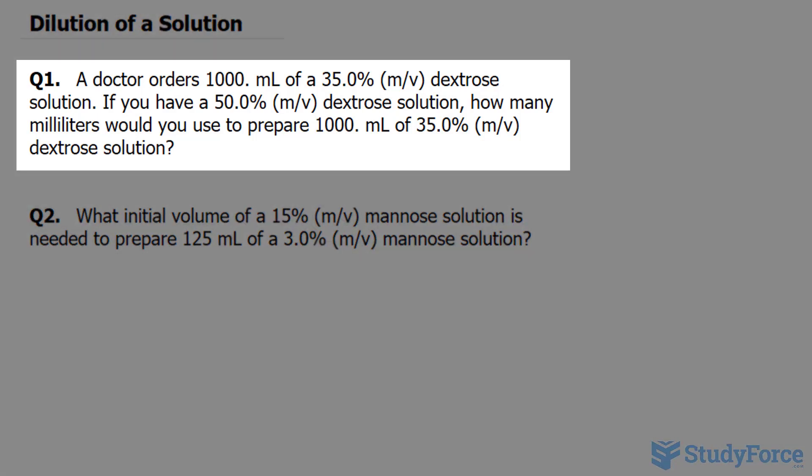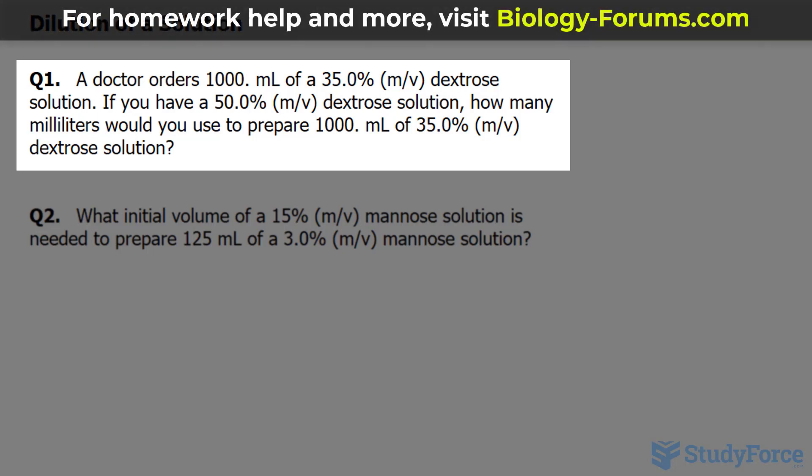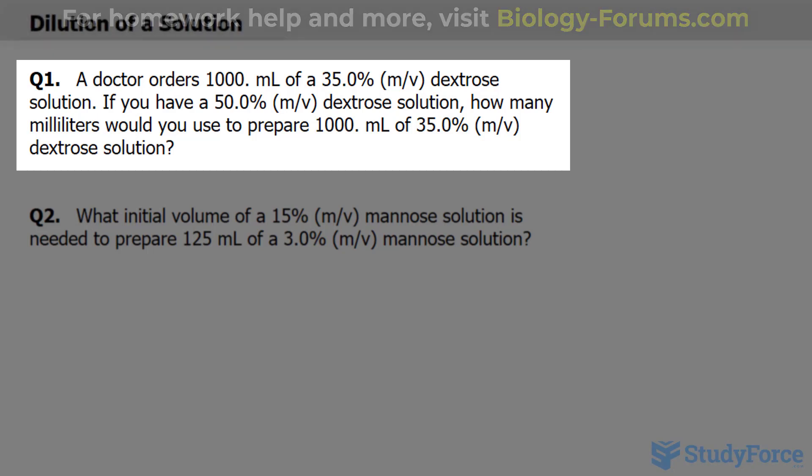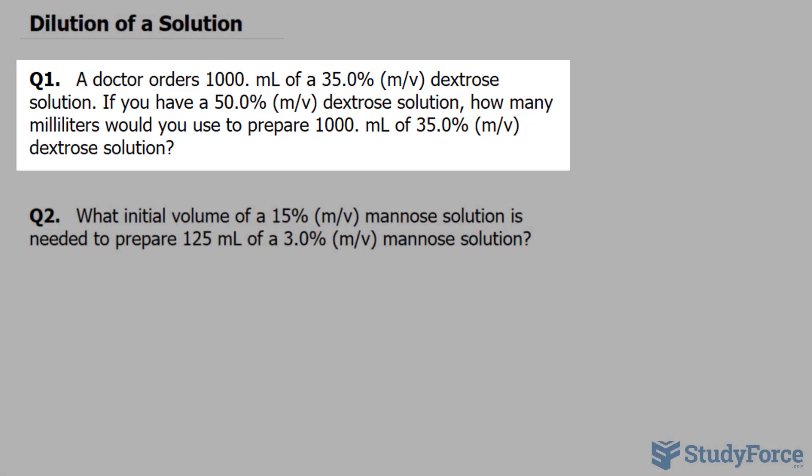Question 1 reads: a doctor orders 1,000 milliliters of 35.0% mass per volume dextrose solution. If you have 50.0% mass per volume dextrose solution, how many milliliters would you use to prepare 1,000 milliliters of 35.0% mass per volume dextrose solution?